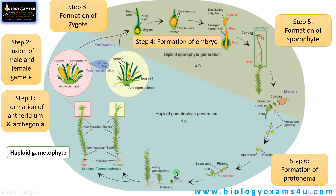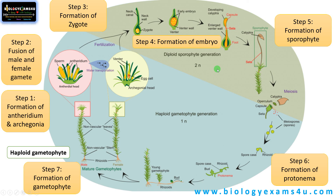The protonema later forms the mature gametophyte, gradually developing the leafy structure with rhizoids — the N-gametophyte. Once again the gametophytic phase begins, and male and female gametophytes are formed. In this life cycle, the dominant phase is the haploid gametophytic phase. The sporophyte is dependent on the gametophyte. There is alternation of generation between sporophyte and gametophyte. Both the gametophyte and sporophyte are morphologically different; therefore this type of life cycle is called heteromorphic alternation of generation. Finally, gametophytes are formed, completing the life cycle.